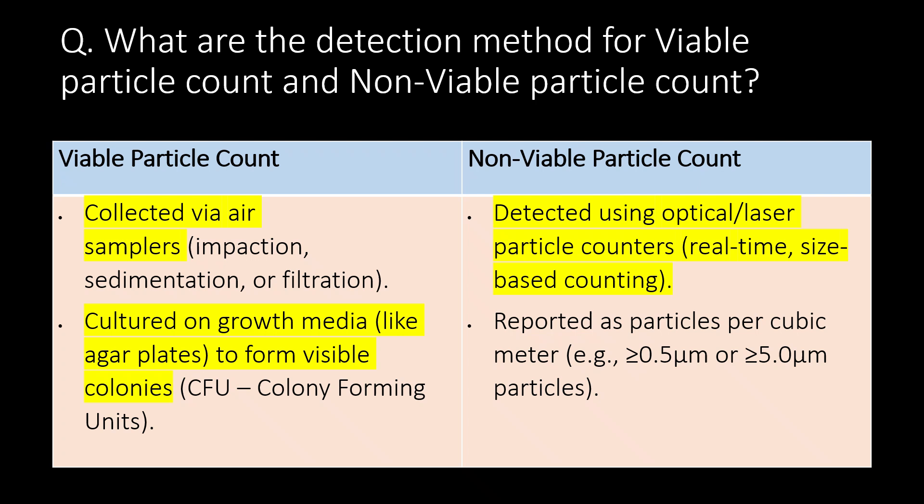In the case of Non-Viable Particle Count, these are detected using optical or laser particle counters. These are also known as real-time or size-based counting and reported as particles per cubic meter, e.g. 0.5 micron or 5 micron particles.